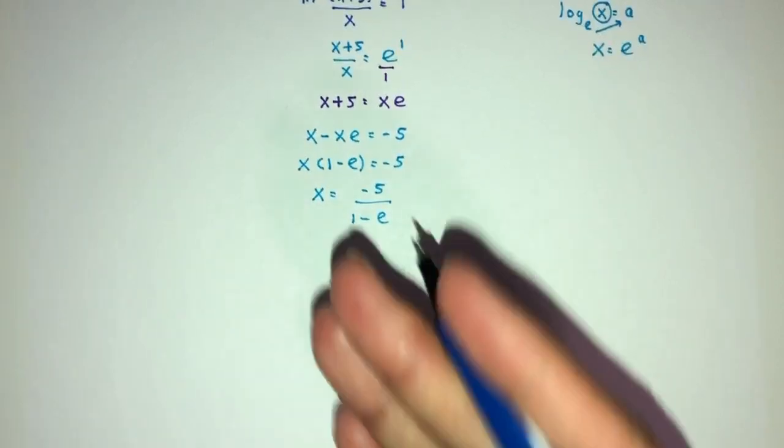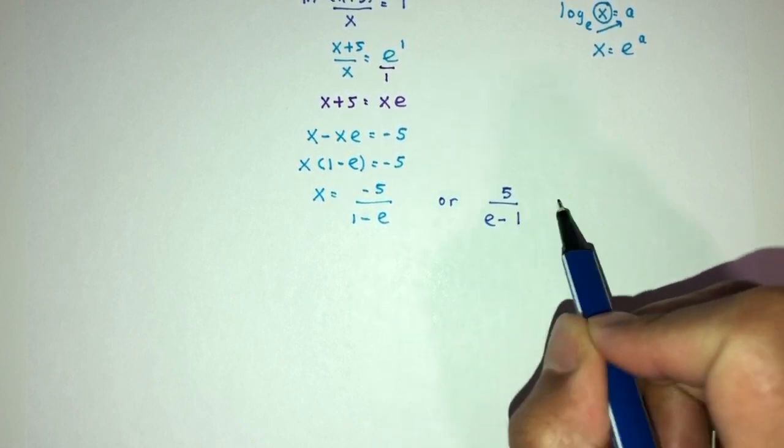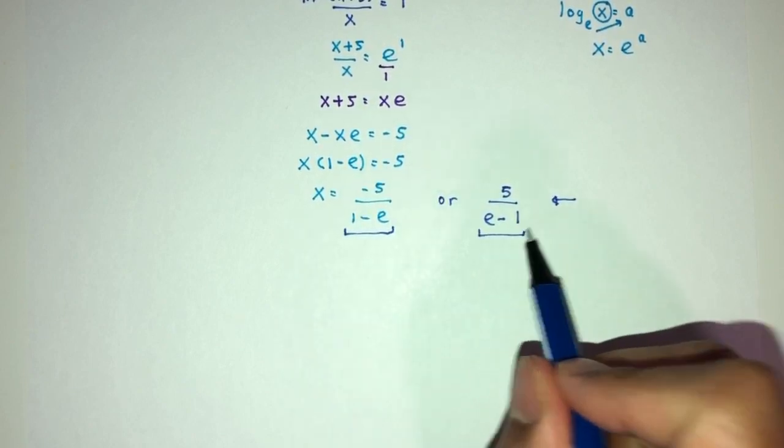x will be the value of -5 over (1 - e). Well, if you want to make this look prettier, we can say it could be 5 over (e - 1). Same thing. This or this could be your answer for your value of x for question number 1.